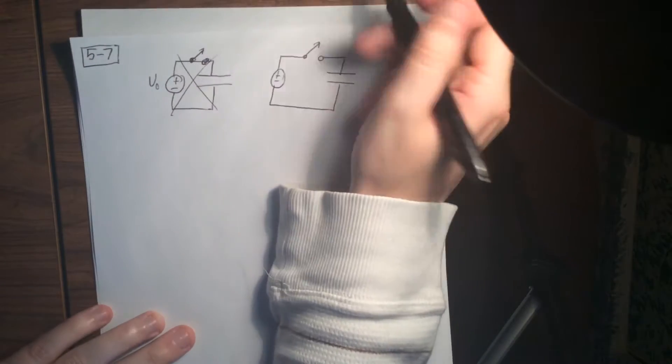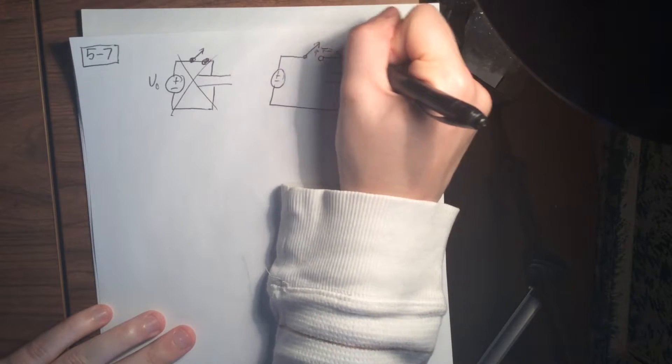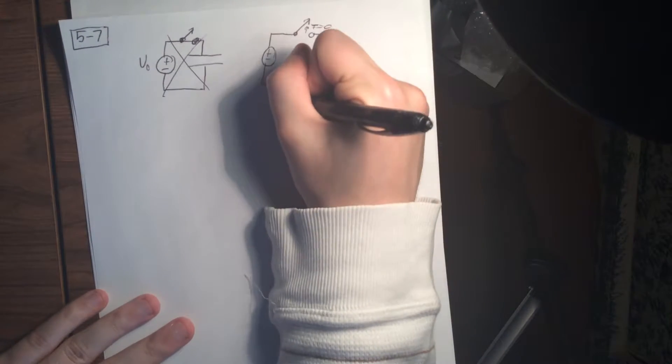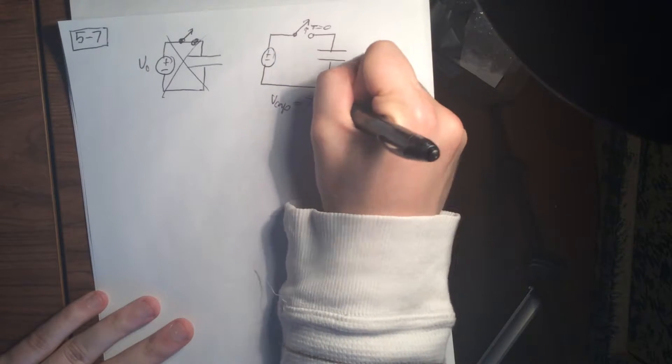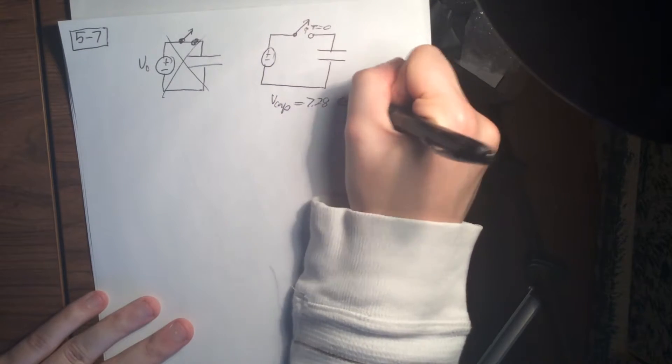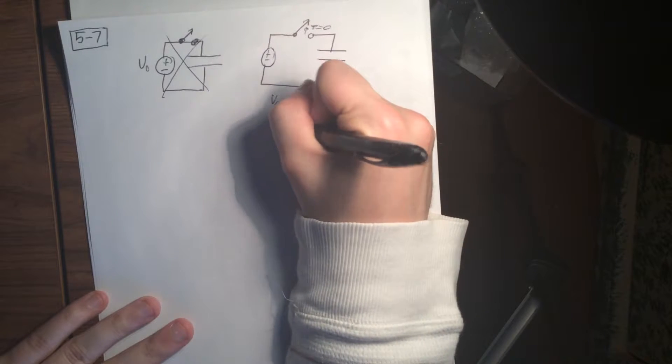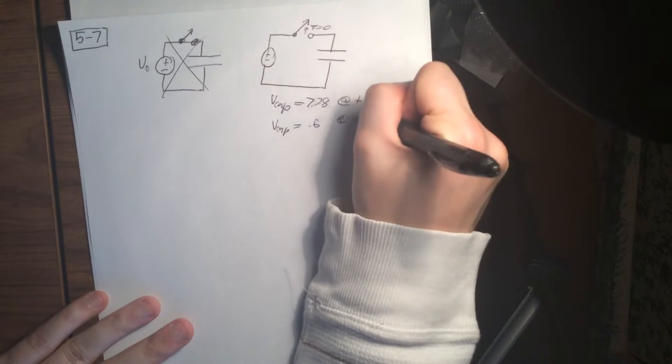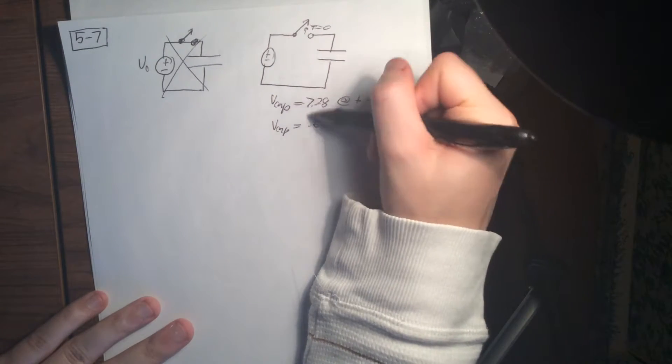So the switch opens at T equals 0, and we have V cap. V cap equals 7.28 at T equals 1, and V cap equals 0.6 at T equals 6. So we've got two unknowns at two times. Cool.